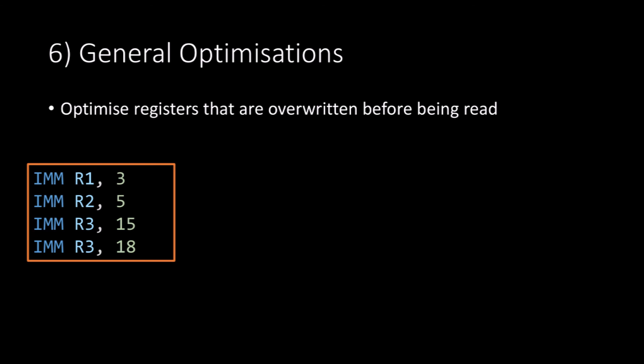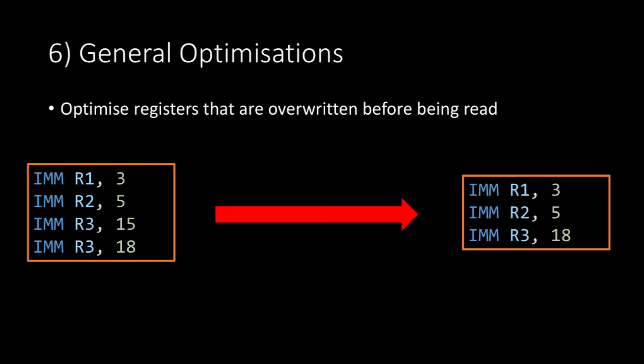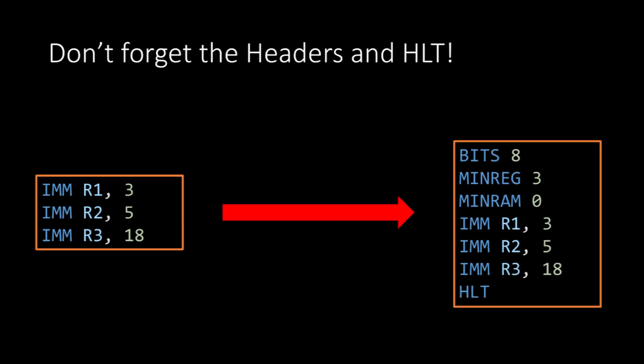Now we can take our code and optimize registers that are overwritten before they are read. What this means is that register 3, since it is overwritten before it gets read, we can delete the initial instruction which writes to register 3. This gives us the final code of immediate r1 3, immediate r2 5, and immediate r3 18. We can then add the header information and a halt at the end of the program, which gives us the code on the right.